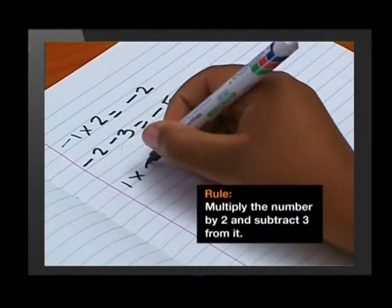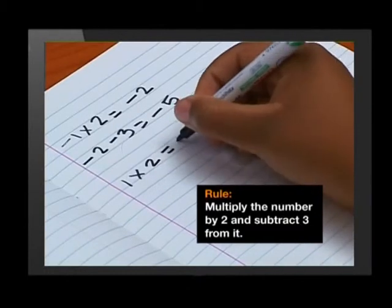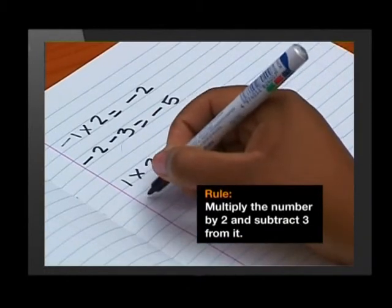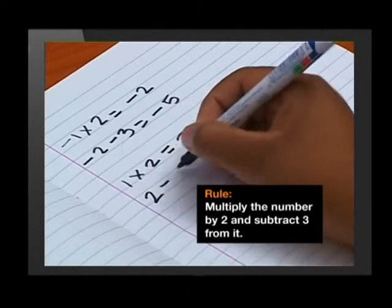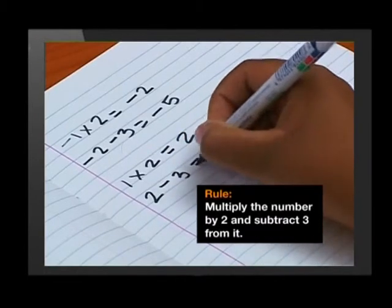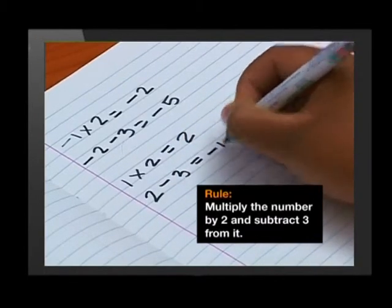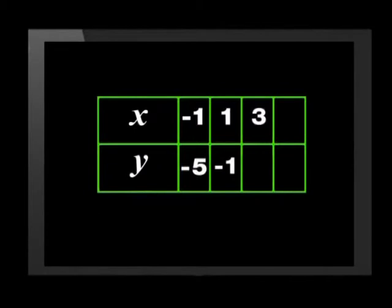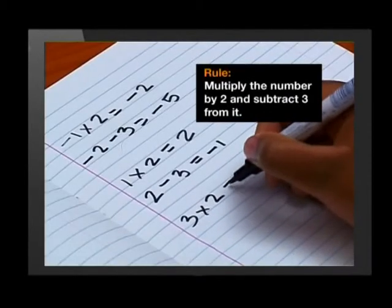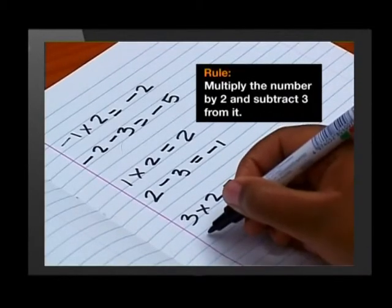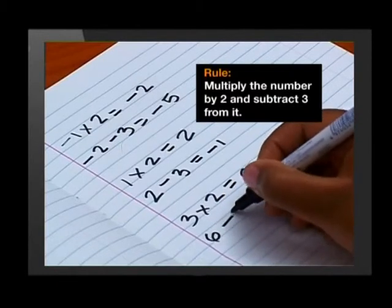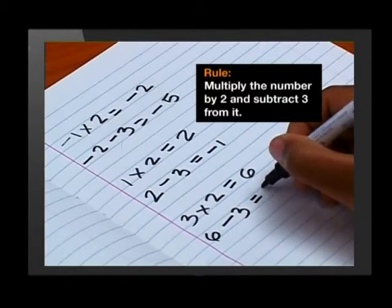Okay, so 1 multiplied by 2 gives us 2. Subtract 3 from this and it gets us minus 1. And this one, 3 multiplied by 2 gives us 6. Subtract 3 from this and it's 3.